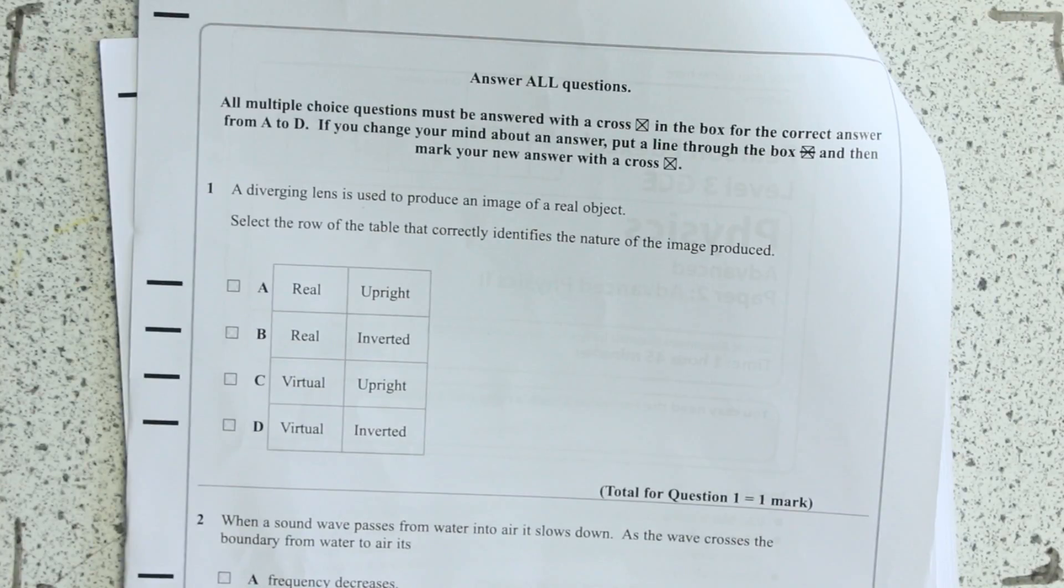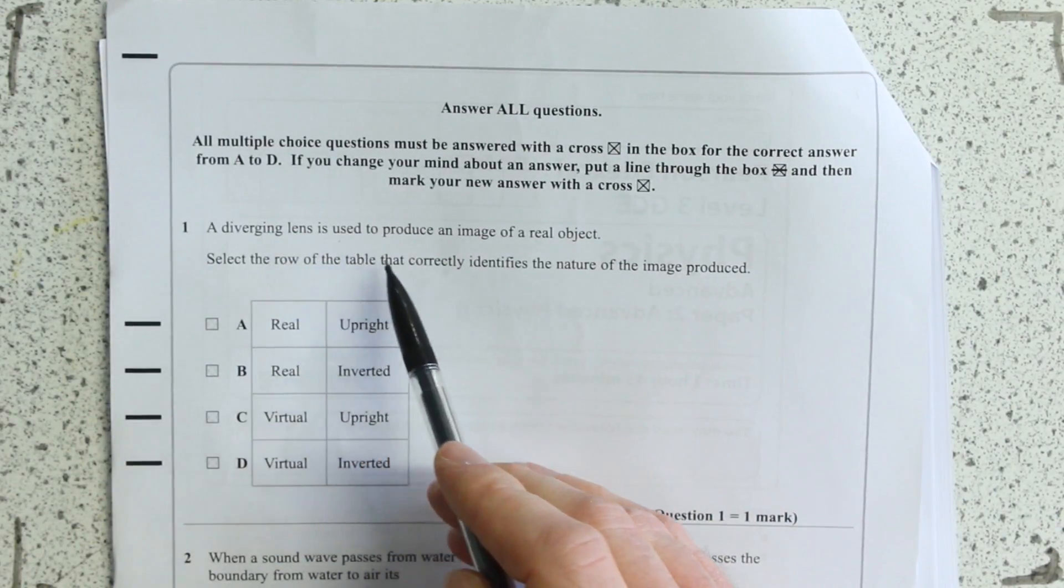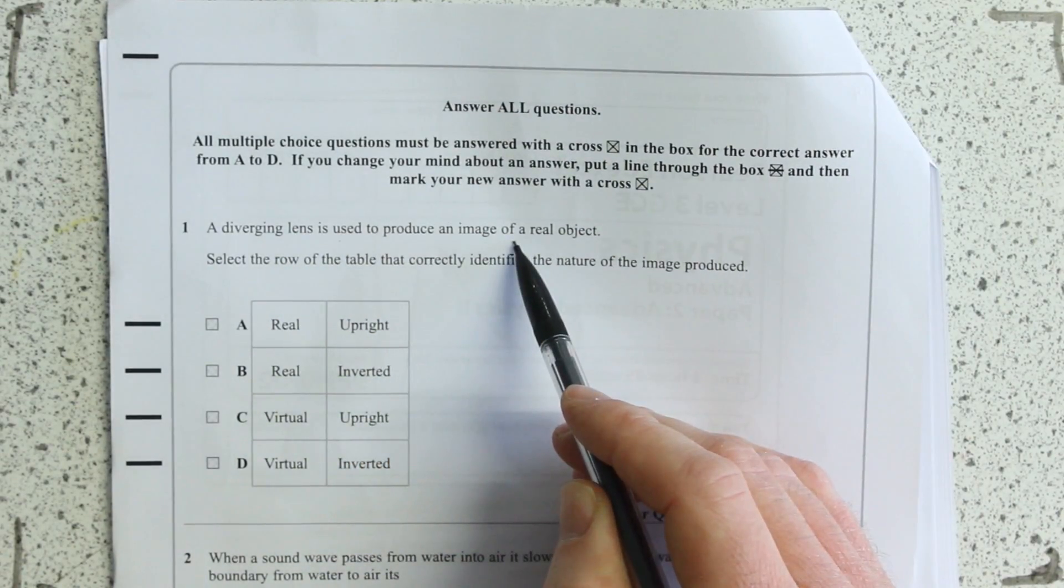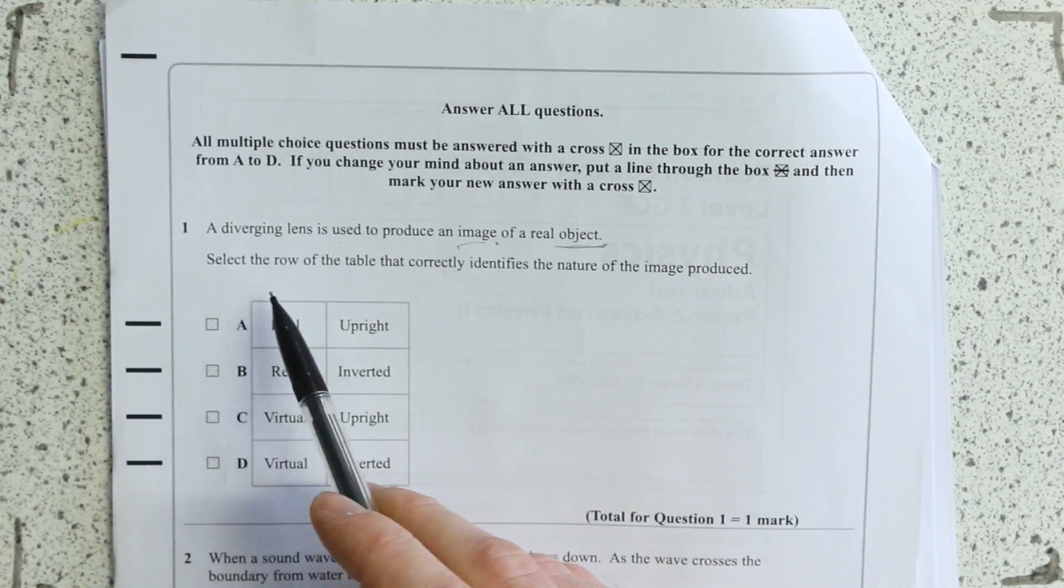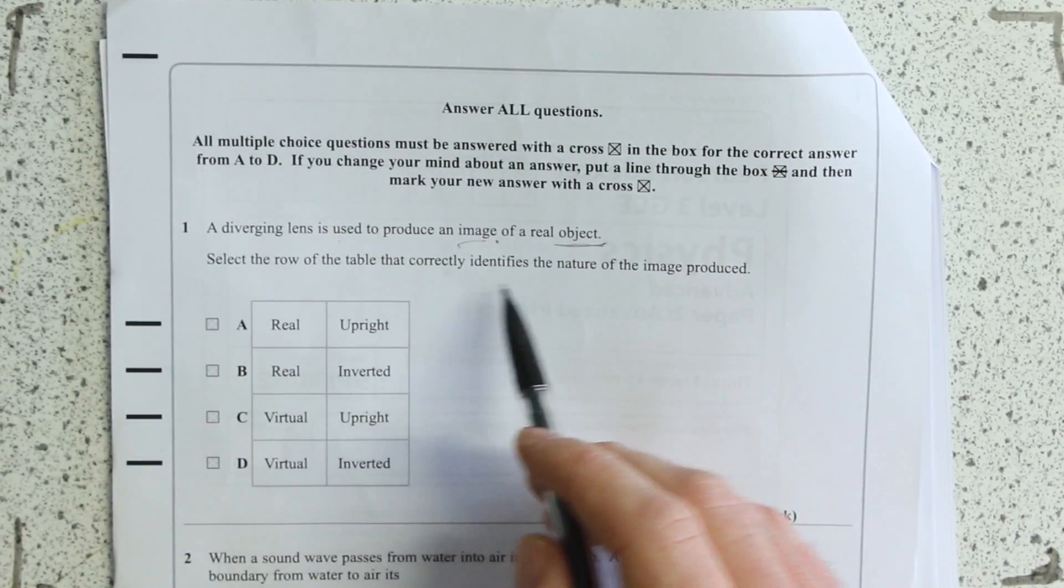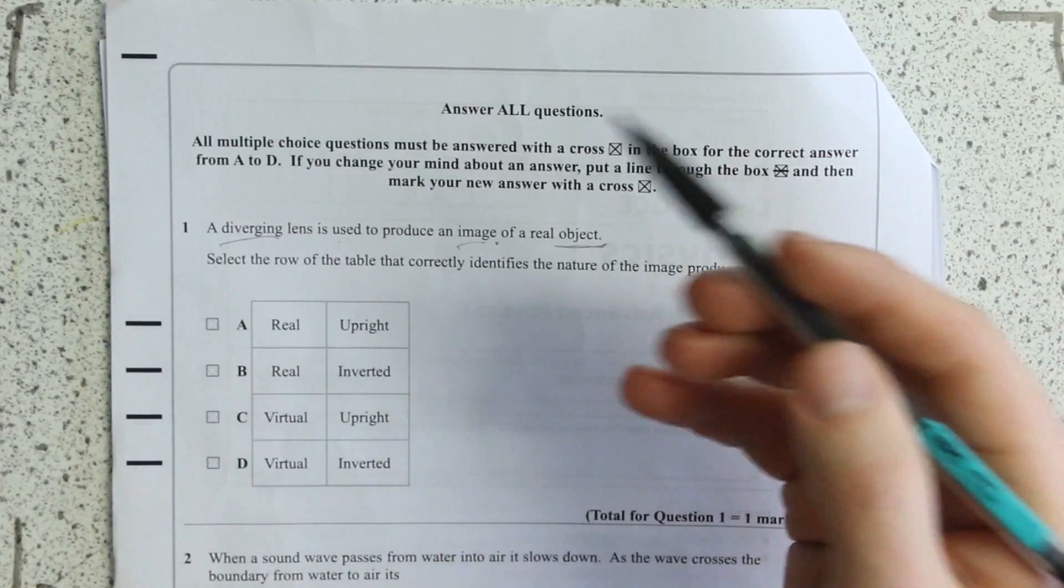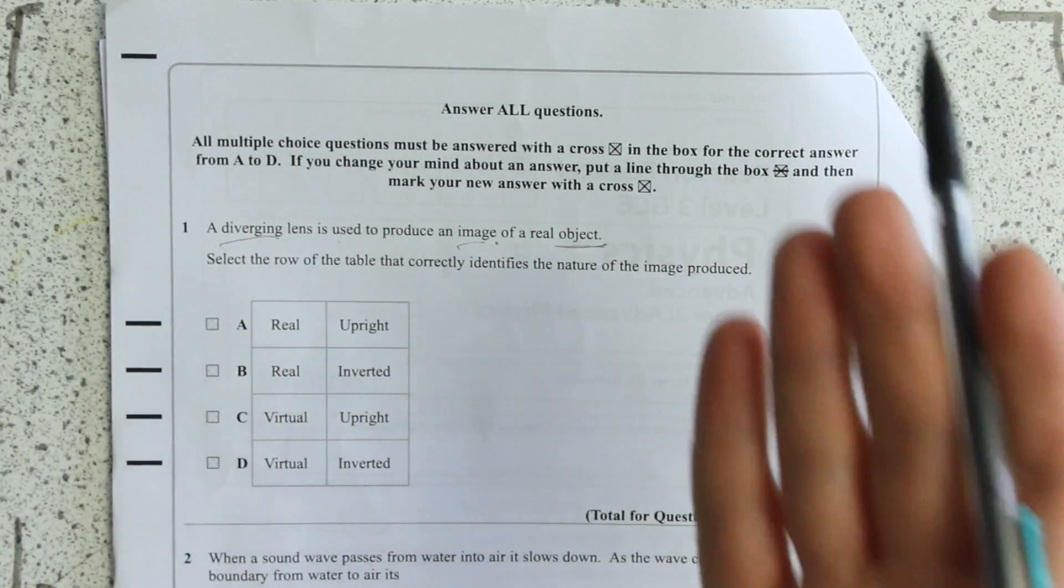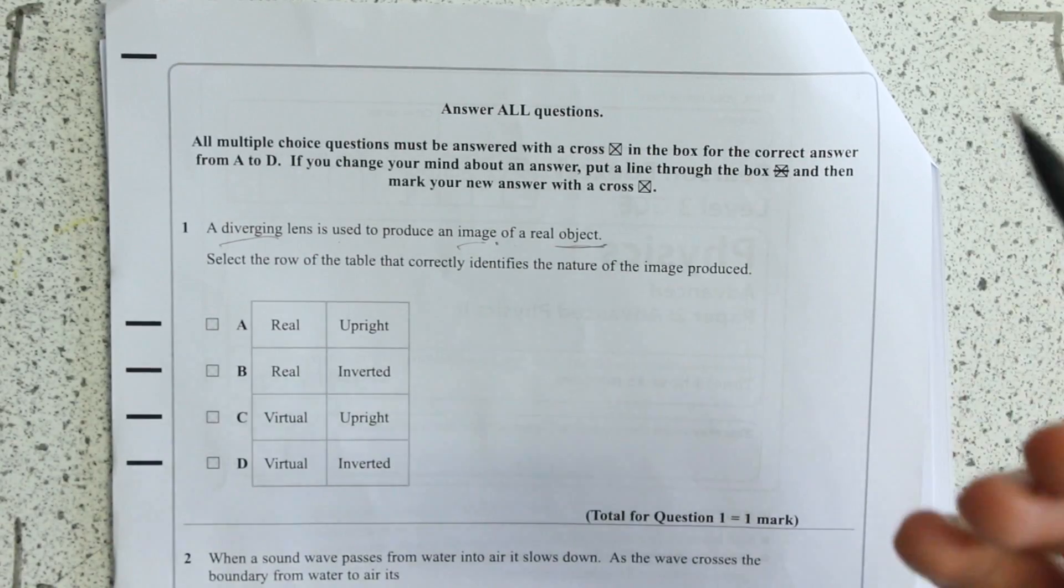This is one where it's probably worth memorizing a set of situations. A diverging lens is used to produce an image of a real object. How does the row of the table correctly identify the nature of the image produced? I would say memorize the rules for diverging and converging lenses, if they're in front of or before the focal length or otherwise. But you could learn it so well that you could figure it out in an exam.